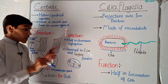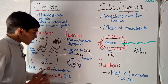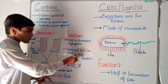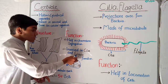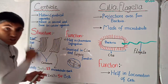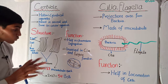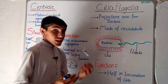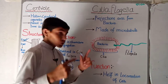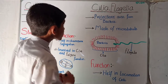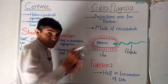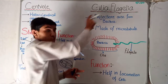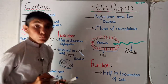The second function of centrioles is that they are involved in cilia and flagella formation. Cilia and flagella are important organelles of the cell and are formed with the help of centrioles. The cilia are short projections, while the flagella are longer projections — that is the main difference between them.